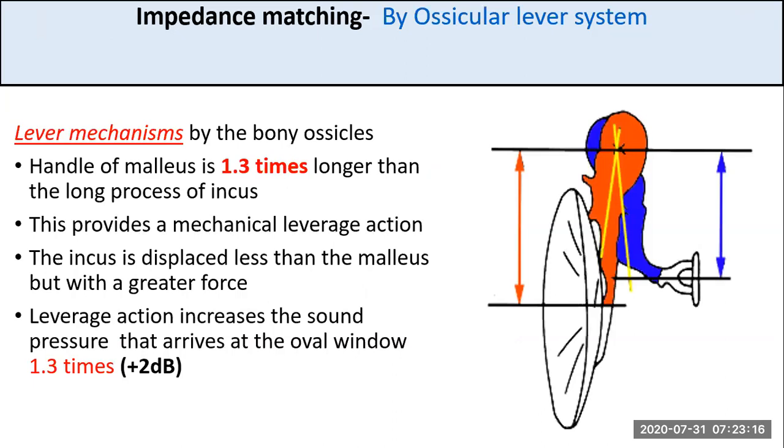The second mechanism involved is the ossicular lever system and the lever mechanism by the ossicles. The ossicles act as a lever system and this lever increases the pressure at the footplate of the stapes. The handle of malleus is 1.3 times longer than the long process of the incus. This length difference provides a mechanical leverage action. The incus being smaller in length is displaced less than the malleus but with greater force. The stapes is displaced much less than the tympanic membrane but with greater force. The leverage action increases the sound pressure that arrives at the oval window 1.3 times, which approximates around plus 2 decibels.